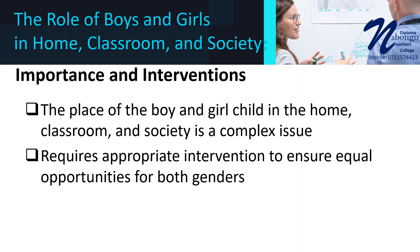Let's look at the role of boys and girls in the home, classroom, and society. The place of the boy and girl child in the home, classroom, and society is a complex issue that requires appropriate intervention to ensure that both genders are provided with equal opportunities to learn, grow, and develop to their full potential. Below are some points that can help to assess and argue the place of the boy and girl child in these three settings.